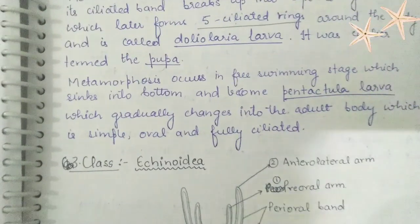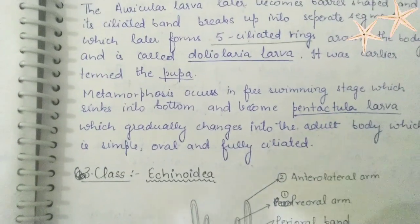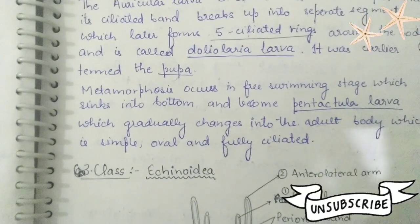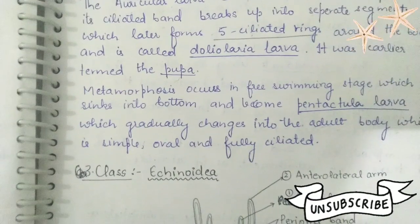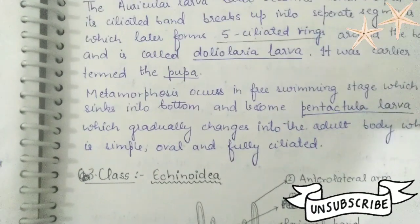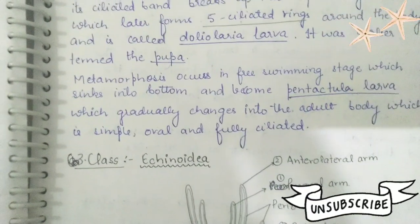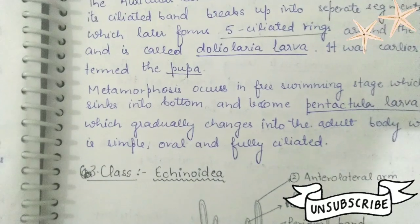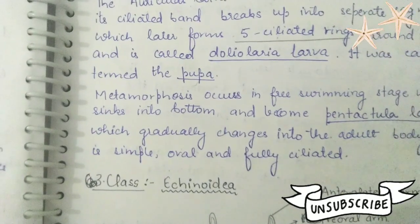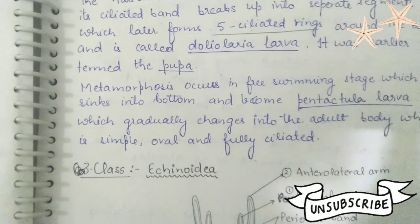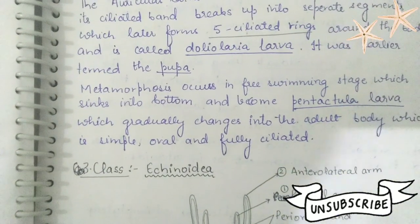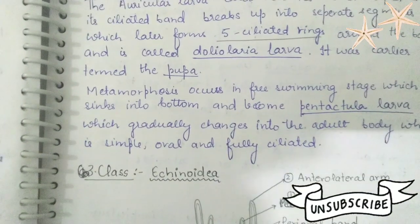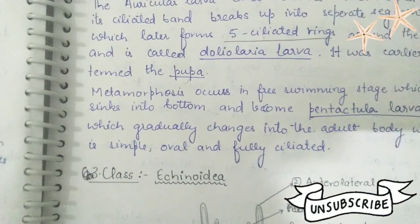In the next video, we will continue to study about the remaining three classes and their larvae: Echinoidea, Ophiuroidea, and Crinoidea. I hope you liked this video. If you did, please don't forget to subscribe, like, share, and comment. Thank you.